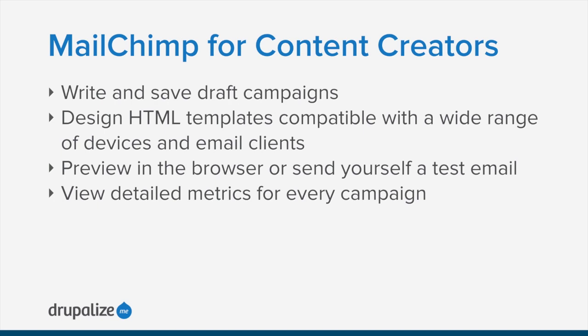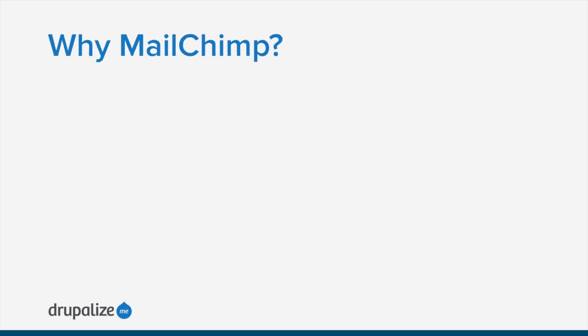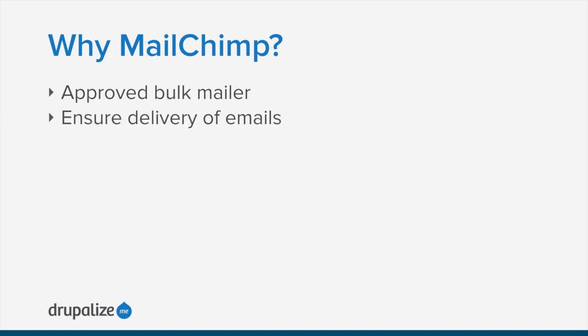There are also a lot of features that aren't specific to content creation, but are super useful nonetheless. MailChimp is an approved bulk mailer, so you can send lots of emails to lots of people with a much lower risk of being flagged for spam. Services like MailChimp have the ability to work with ISPs and corporate domains to ensure your emails are recognized as safe and approved, and they can handle things like retries if your email bounces. All of this adds up to more likely delivery of the email that you send.